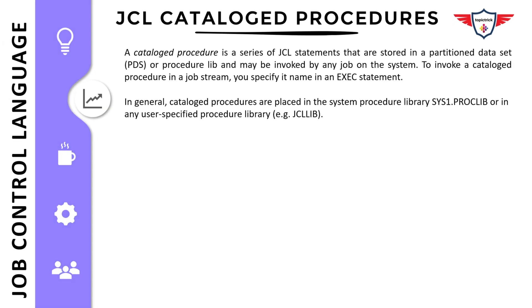A catalog procedure is a series of JCL statements that are stored in a partitioned data set or a procedure library, and it can be invoked by any JCL on the system. In order to invoke a catalog procedure you need to use an EXEC statement. In general, catalog procedures are placed in the system procedure library, that is SYS1.PROCLIB, or in any user-specific procedure library. Now let's look at an example of a proc and a JCL.